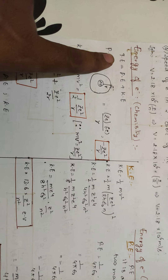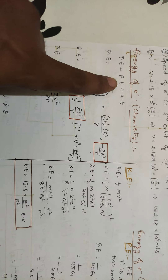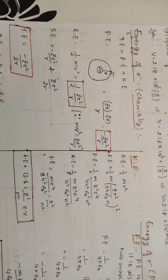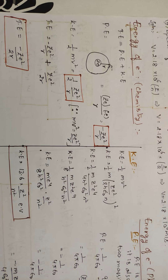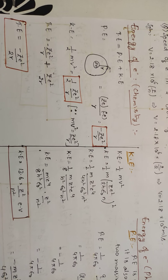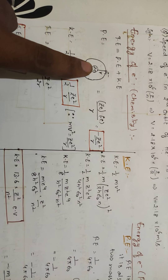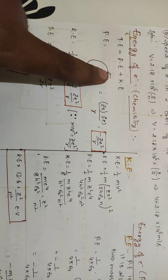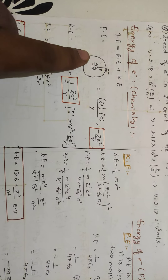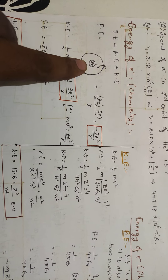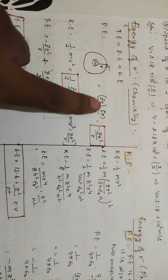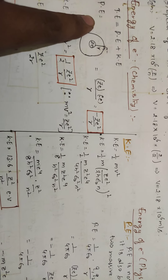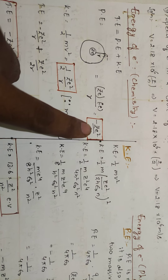Energy. Total energy, we know in physics, is nothing but the summation of potential energy plus kinetic energy. Potential energy is nothing but the energy possessed by a body by virtue of its position. So here you are having the number of protons Z, and each proton and electron are separated by a distance R with charge. So that is ZE into minus E by R, which gives us minus ZE² by R. This is the potential energy — minus ZE² by R.